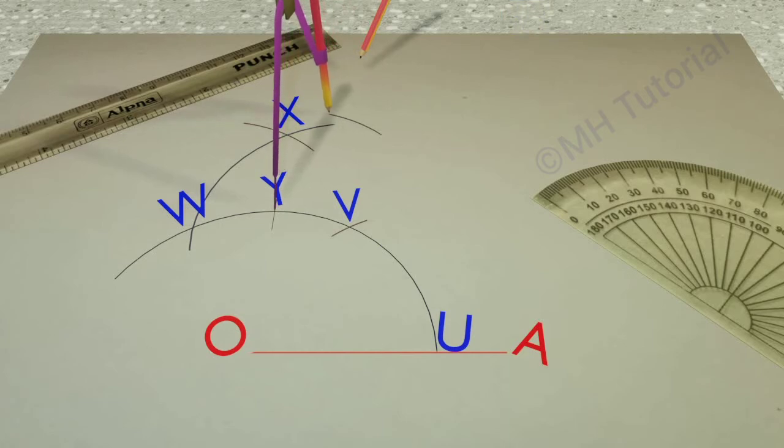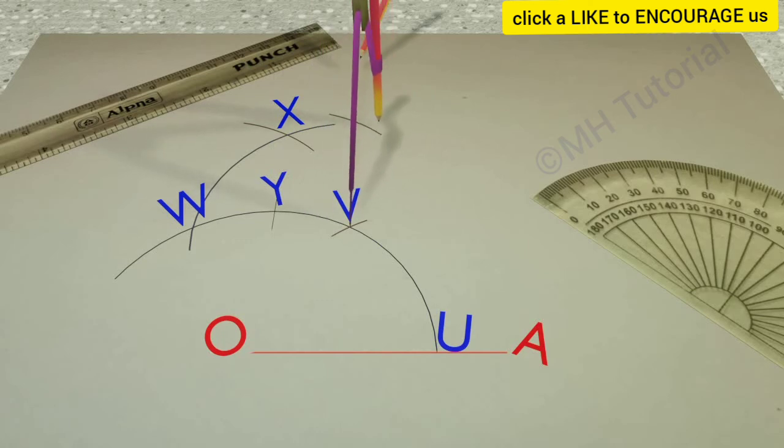Two circle arcs of the same radius are drawn from point V and point Y. These two arcs meet each other at point Z.